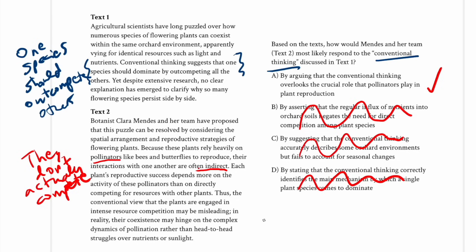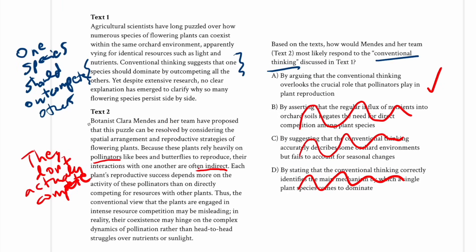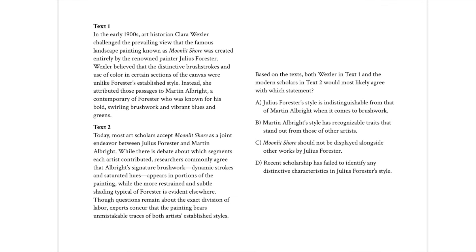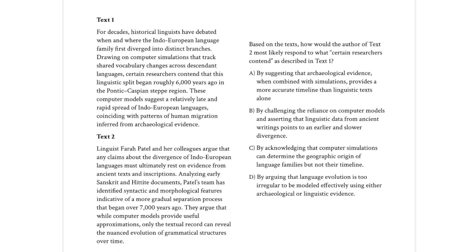Nothing fancy here in terms of secret strategies — we just want to be careful in reading. Read the prompt, then use that to zero in on what it is in the first passage to focus on: in this case the conventional thinking, in the other case the overall argument. Then determine in text two whether it's the author or someone mentioned in text two. Occasionally they'll ask how the author of text one would respond to something in text two — I'd still read them in order since text one often provides background. I'll have a separate video on agreement questions and additional videos with more challenging examples of each type.